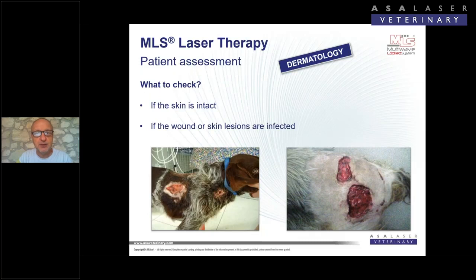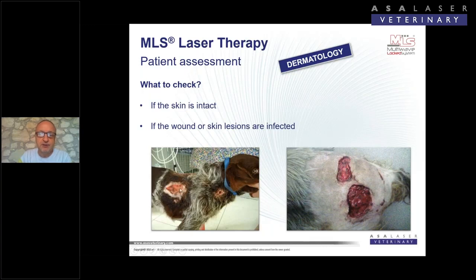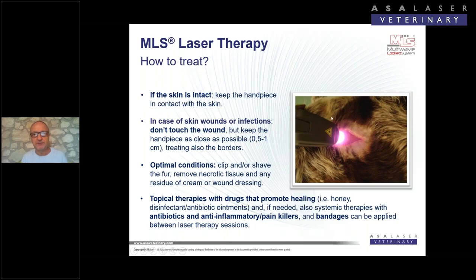Another point of strength of MLS laser therapy is the result we get in stomatitis. Before deciding which protocol to apply, the first thing to check is the state of the skin — do we have intact skin with no wounds, or are we facing wounds with loss of tissue and potentially severe infection? Based on this, we decide the right protocol. For wounds with loss of tissue requiring second-intention closure, we have two dedicated programs in the device.